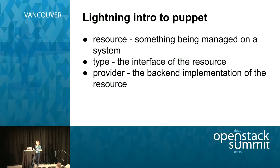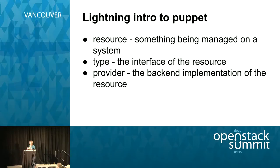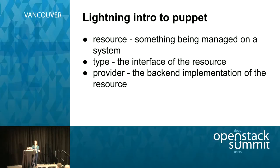Since we're coming at this from a Puppet perspective, I want to give a couple of vocab words so we're all on the same page. A resource in Puppet is something being managed on a system. A type is the interface Puppet gives you to that resource — it lets us specify properties and the name of the resource. The provider is the back-end implementation — that's how we get the resource to come into existence. Types and providers are both written in Ruby; they're plugins for Puppet and must be written in Ruby.